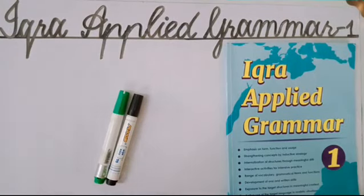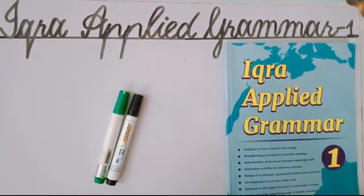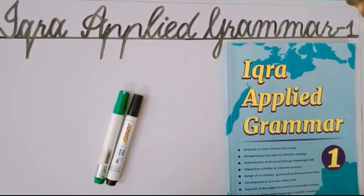Bismillahirrahmanirrahim, Assalamu Alaikum Rahmatullahi Wabarakatuhu. Students, I hope you all are fine. Welcome to lesson number two of unit number nine from Iqra Applied Grammar One. As you know, yesterday we started unit number nine from this book and we attended the first lesson. Today we are going to start lesson number two, which is the practice and extended practice — but before starting, we are going to revise our previous lesson.